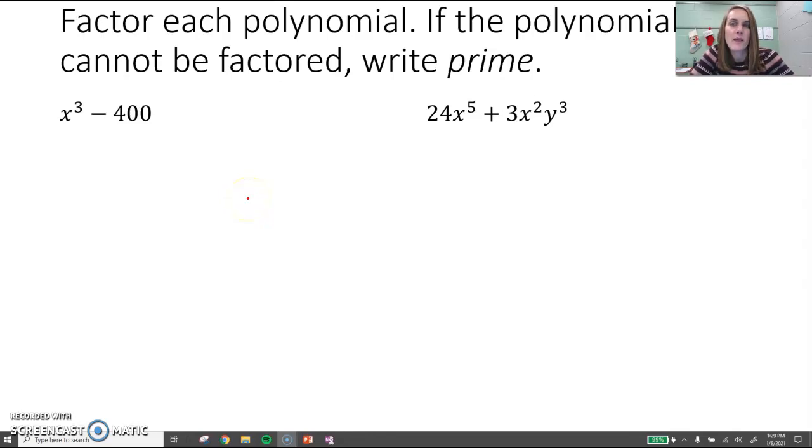Factor each polynomial. If the polynomial cannot be factored, write prime. So we have x cubed minus 400.